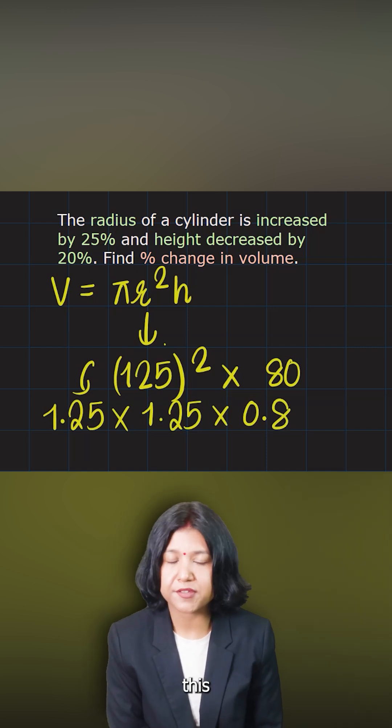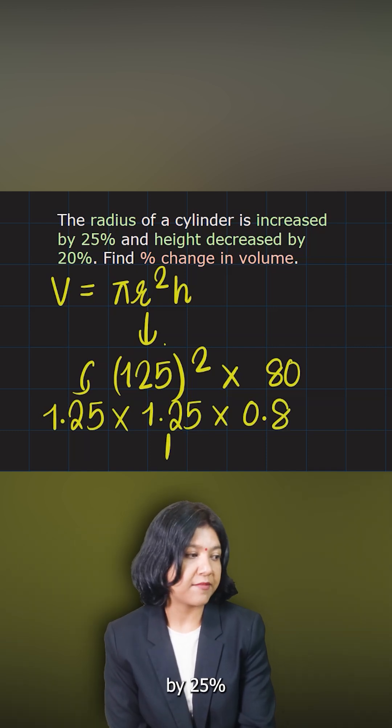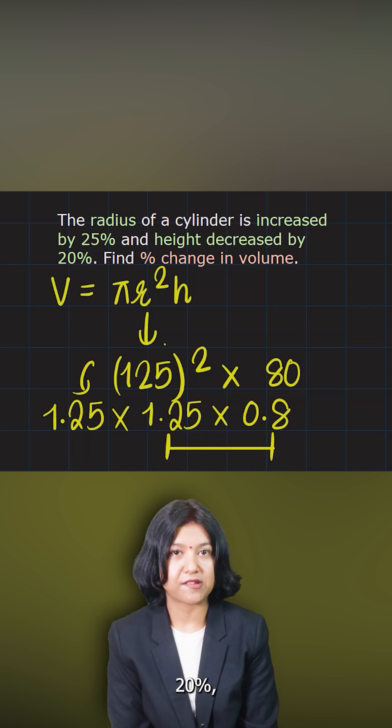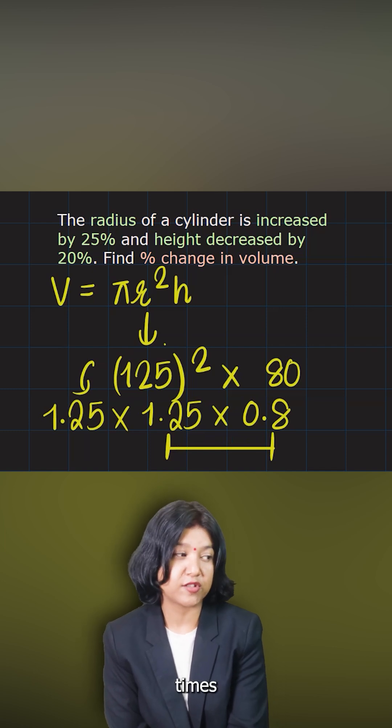So you can always remember this. When there is an increase by 25 percent and decrease by 20 percent, there is no net change. Or if you times them together, the answer here is just 1.